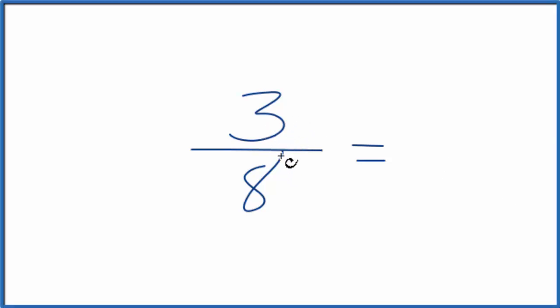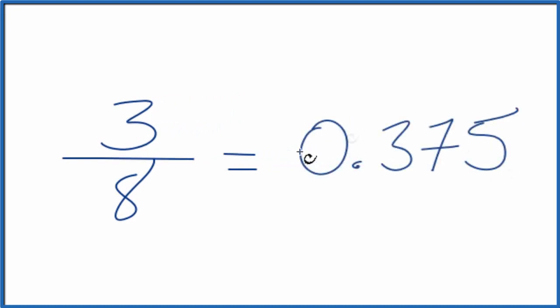Let's write the fraction 3 eighths as a decimal. So 3 over 8, what is that as a decimal? You could just type it into your calculator and you end up with 0.375. So 3 eighths as a decimal, that's 0.375.